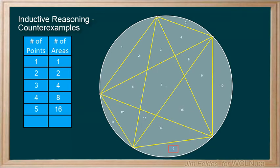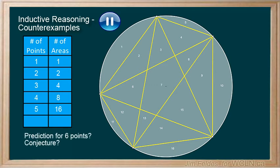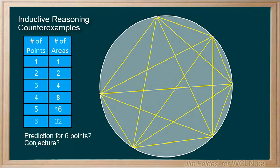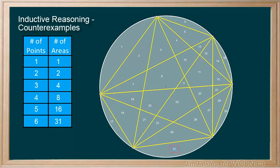Now, pause the video and predict the number of areas when we add one more point, and come up with a conjecture about this pattern. You likely came up with something like, each time we add another point to the circle, we double the number of areas inside the circle. With six points, our prediction is 32 areas. However, the number of areas is only 31. The pattern is broken by the sixth point on the circle.